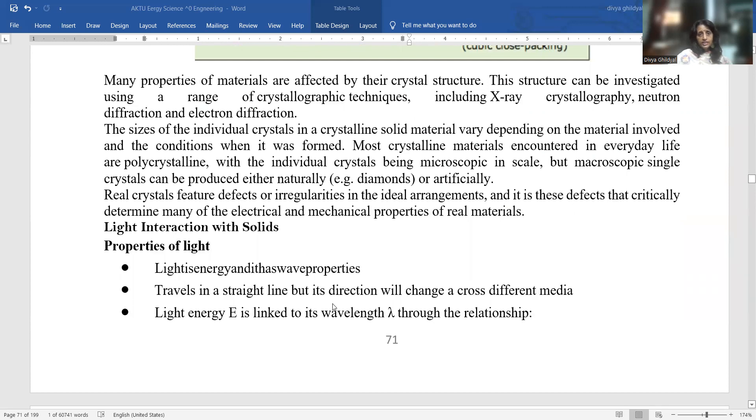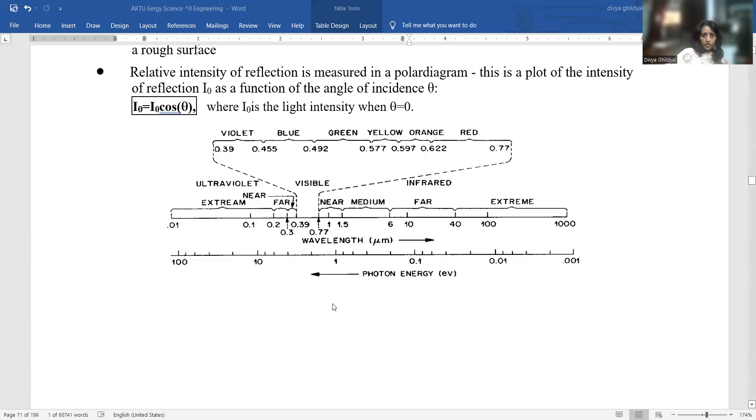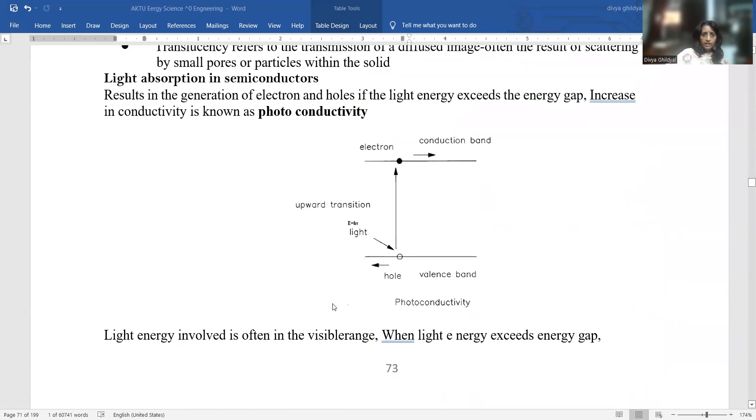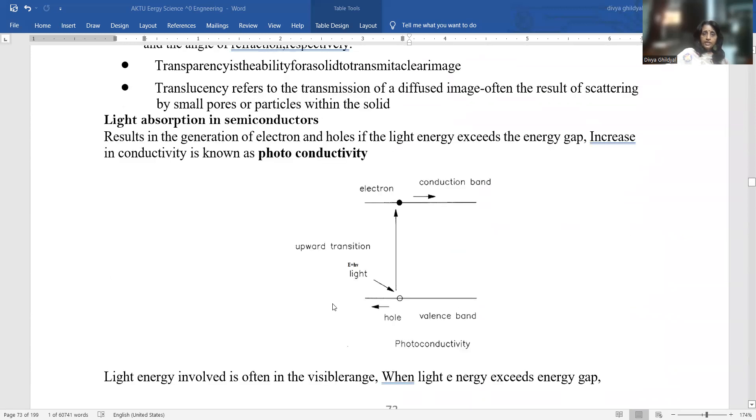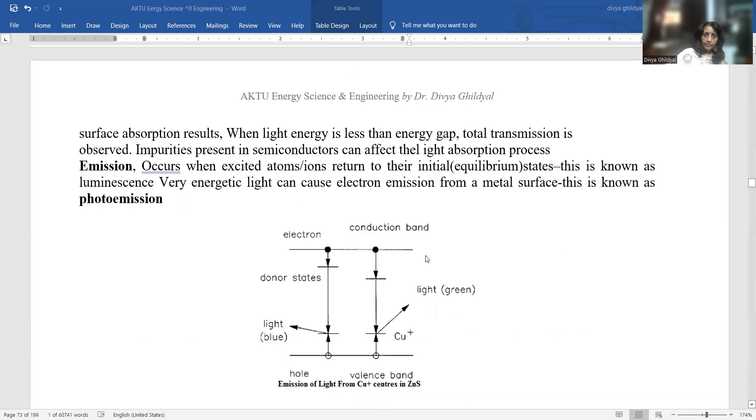Light interacting with solids. Light is energy and it has wave properties. It travels in straight line but its direction will change across different materials. Light energy is linked to wavelength through Einstein's energy equation E equals hc by lambda. Light also interacts with these solids to generate energy. Light absorption in semiconductors results in the generation of electrons and holes if the light energy exceeds the energy gap, increasing conductivity known as photoconductivity. Emission occurs when excited atoms-ions return to their initial state, known as luminescence. Very energetic light can cause electron emission from a metal surface, known as photoemission.